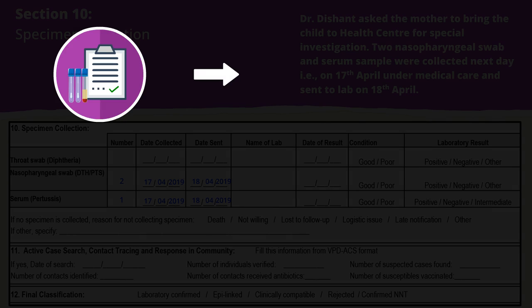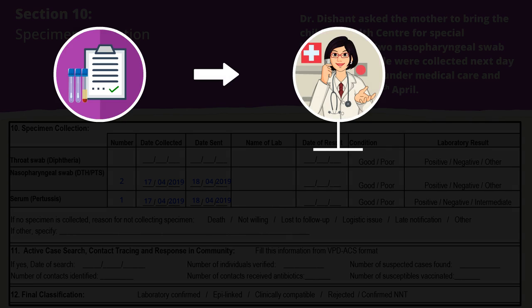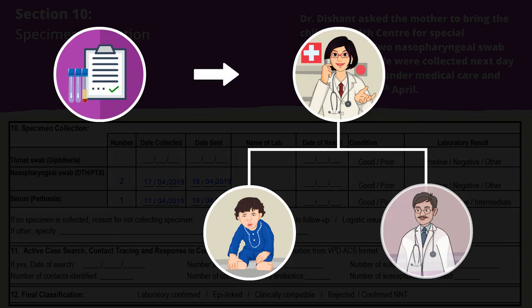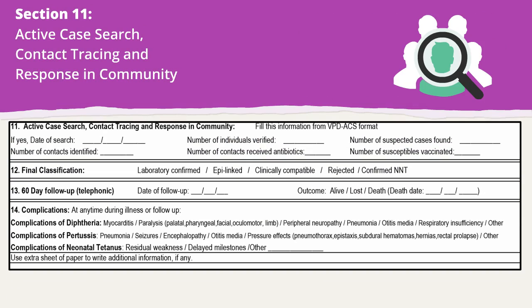Once lab results are available, the DIO or SMO office should share them with the patient and health facilities. Active case search in the community is important to identify all suspected cases, contacts, and susceptibles for early intervention. The ACS should be done using the VPD ACS format.